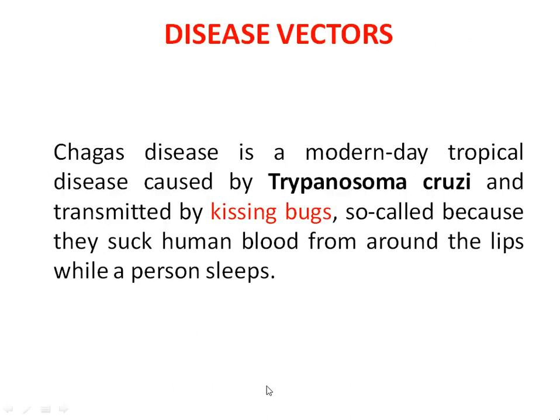Chagas disease is a modern-day tropical disease caused by Trypanosoma cruzi and transmitted by kissing bugs. Why are they called kissing bugs? They are so called because they suck human blood from around the lips while a person sleeps — both upper lip and lower lip. For this reason, they are referred to as kissing bugs.